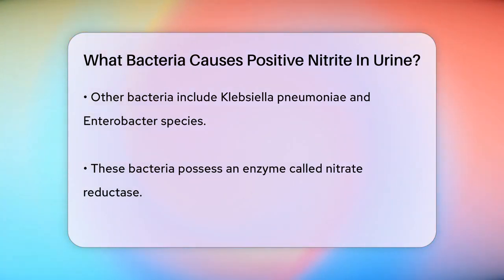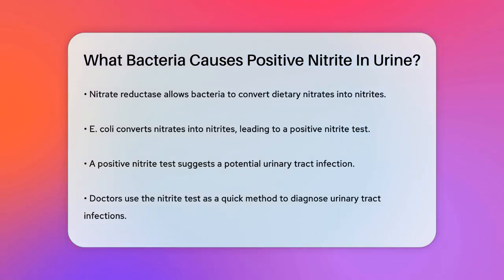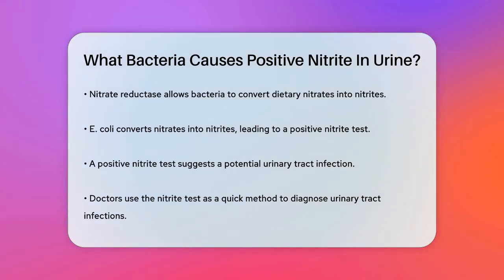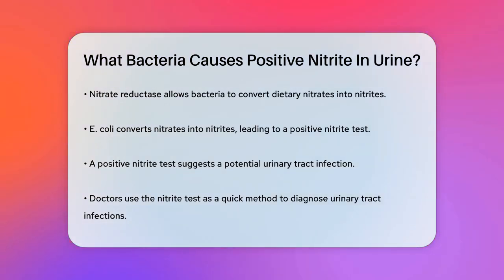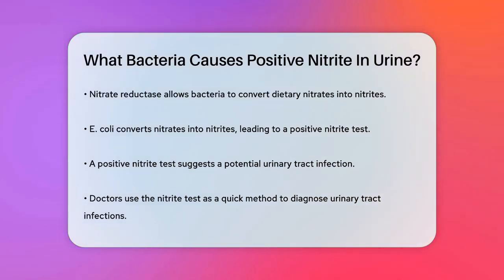This process is what makes the nitrite test positive, indicating a potential infection. So the next time you see nitrites in your urine test, it's likely due to these bacteria, especially E. coli and its relatives, hard at work converting nitrates into nitrites. This is why doctors often use the nitrite test as a quick and reliable way to check for urinary tract infections.